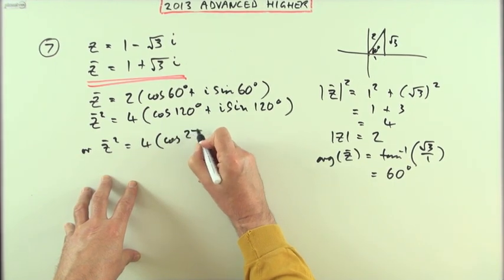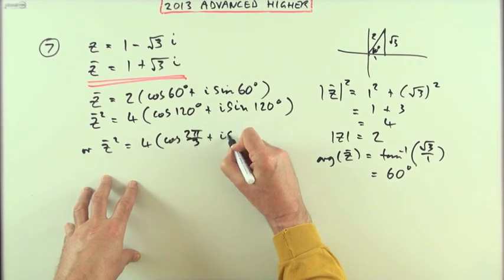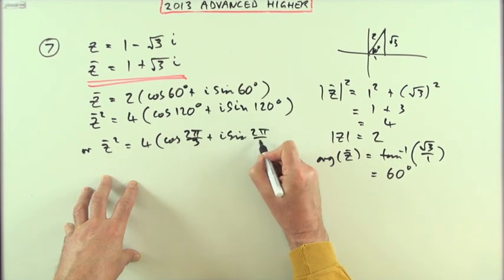I'll just say which equals four times cos 2π/3 plus i sine 2π/3.